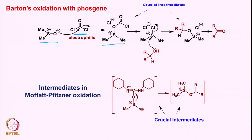Once this intermediate forms, it can lose carbon dioxide and chlorine, and after the loss of carbon dioxide, this intermediate forms — where the sulfur is positively charged and chlorine is the leaving group. The alcohol then attacks onto this particular intermediate, leading to another intermediate of this kind.